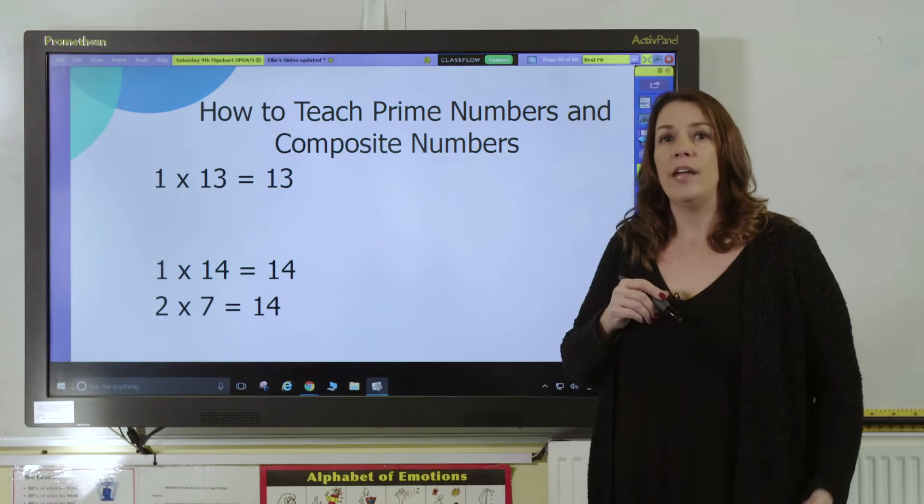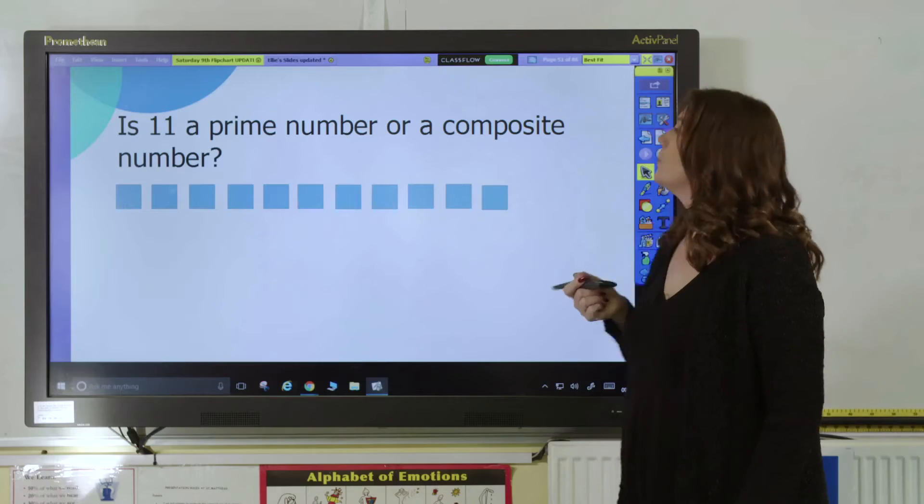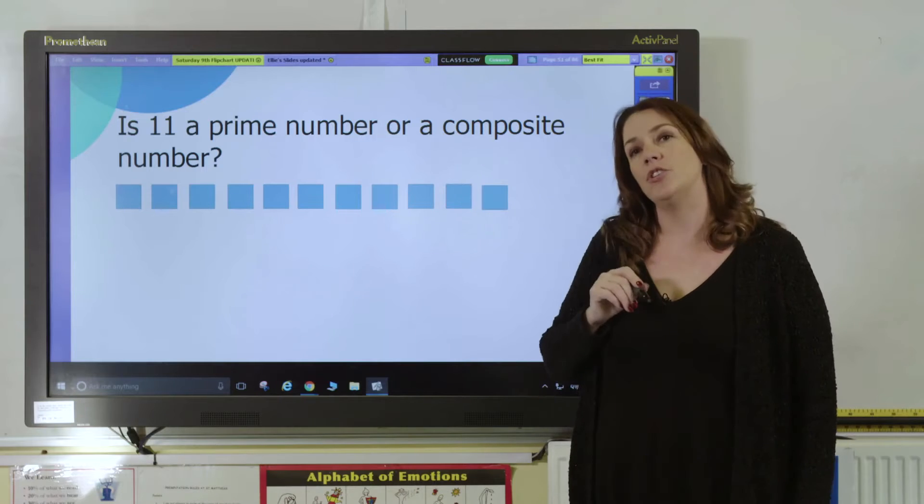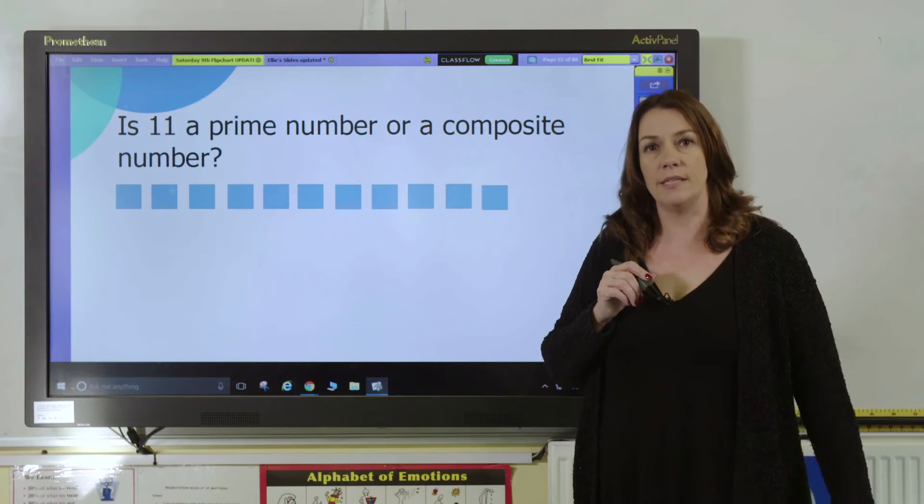One good way of investigating composite numbers and prime numbers is to use base 10 blocks. So let's have a look at what this looks like. Here I have some base 10 blocks and the question is, is 11 a prime number or a composite number? So let's investigate.